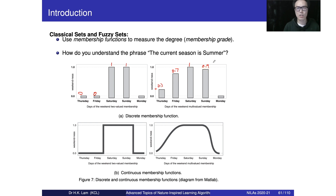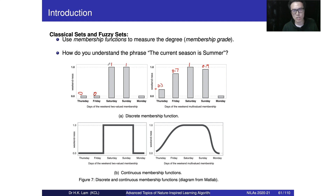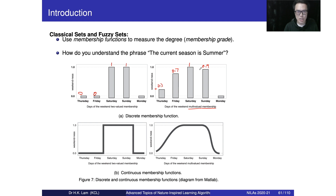We use 0 to represent that an element does not belong to the set and 1 to indicate it belongs fully. When we talk about the fuzzy set, we have a multi-valued membership function — values somewhere between 0 and 1. If we draw this continuously, we get a continuous membership function.